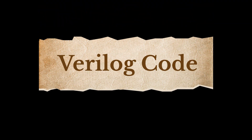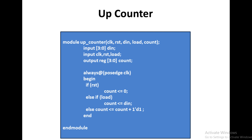Now we are moving towards the Verilog coding part. The first example is for an up counter. The module has the name and the input/output signals: clock, reset, d_in, load, and count. d_in is a 4-bit input; clock, reset, and load are single-bit inputs; and count is a 4-bit reg type output. In the always block at positive edge clock, if reset is high then zero is assigned to count; else if load is high then d_in is assigned to count.